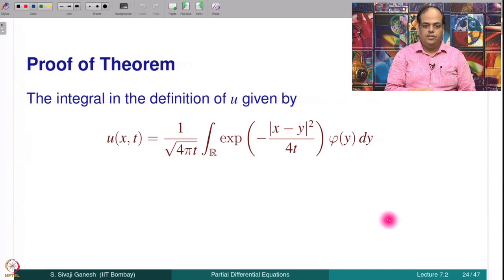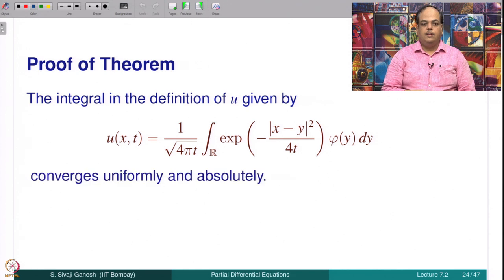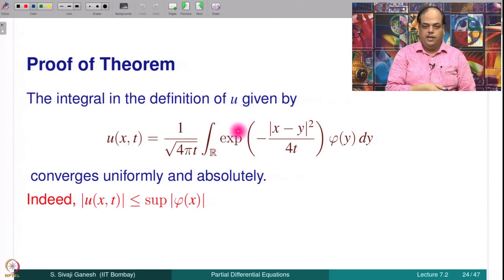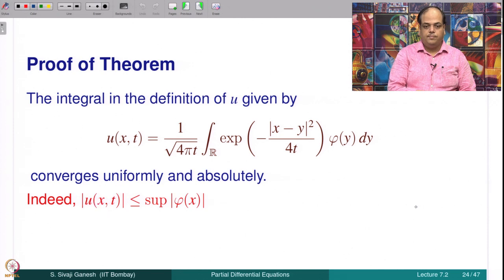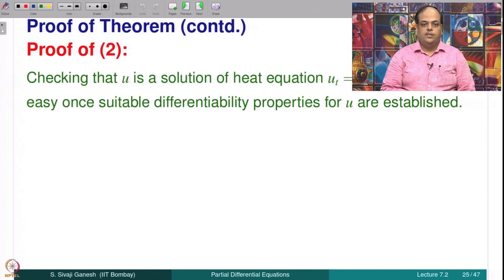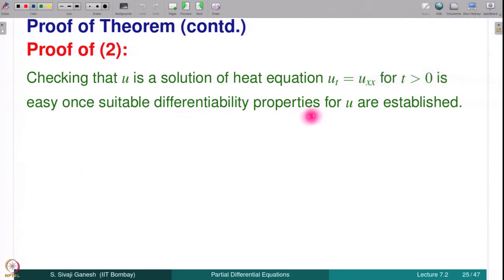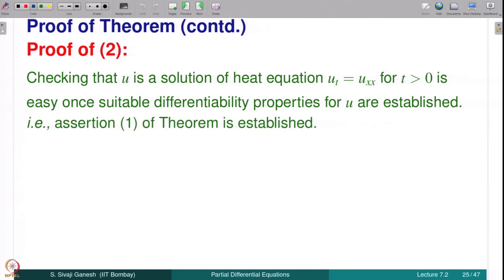This says the initial condition is realized: the function defined for t > 0 can be extended continuously up to t = 0 and assumes the value φ(x). The integral in the definition of u converges uniformly and absolutely — indeed |u(x,t)| ≤ sup|φ(y)| · ∫ 1/(√(4πt)) exp(−(x−y)²/4t) dy = sup|φ|, so if φ is bounded then u is also bounded. Checking that u solves the heat equation is easy once differentiability property (assertion 1) is established; what we need is that u is in C²¹.